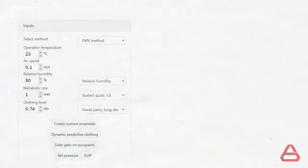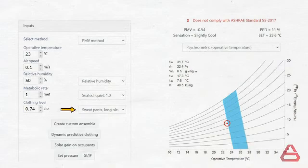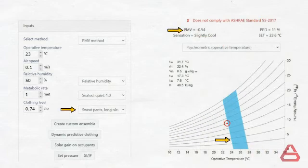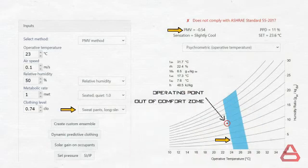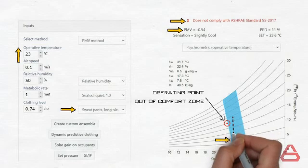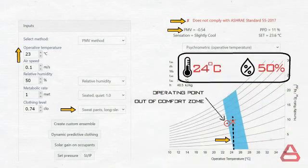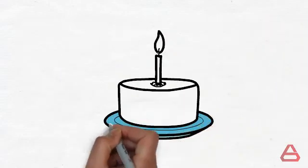Changing the clothing level from typical indoor clothing to long sleeve shirts with sweatpants, you can see how the comfort zone has shifted to the right. The PMV dropped from minus 0.08 to minus 0.54, and the operating point is now out of the comfort zone and no longer compliant with ASHRAE Standard 55. Therefore, a higher temperature is required to achieve comfort. Raising the temperature to 24 degrees Celsius brings the operating point back into the comfort zone, giving new design conditions of 24 degrees Celsius and 50% relative humidity. With the help of this tool, determining the needed design conditions is a fairly easy task.